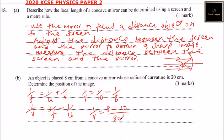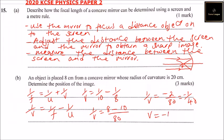So 1 over v equals minus 2 over 80, which simplifies to minus 1 over 40. That means v equals minus 40. We ignore the minus sign, so v equals 40 cm. The negative sign indicates the image is behind the mirror.